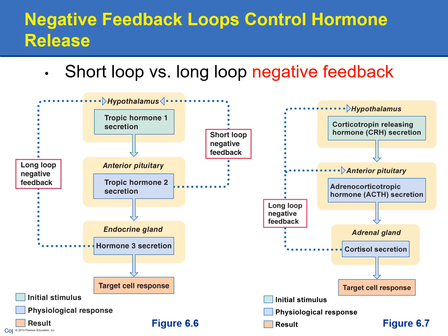One of the ways the body maintains homeostasis is through negative feedback, which is used extensively by the endocrine system to keep hormone levels in the normal range. You'll see negative feedback loops where a hormone feeds back onto the anterior pituitary or the hypothalamus, inhibiting the release of hypothalamic and anterior pituitary hormones. That's how we control hormone levels using negative feedback.